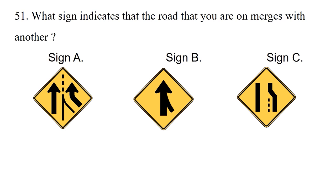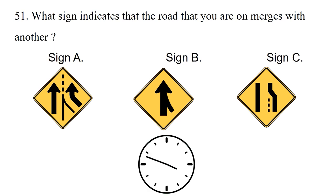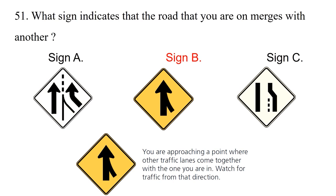Question: What sign indicates that the road that you are on merges with another? Option 1: Sign A. Option 2: Sign B. Option 3: Sign C. The answer is option 2: Sign B. You are approaching a point where other traffic lanes come together with the one you are in. Watch for traffic from that direction.